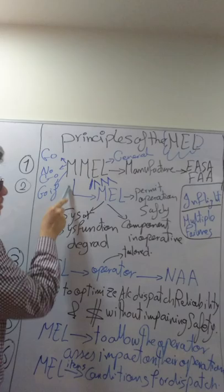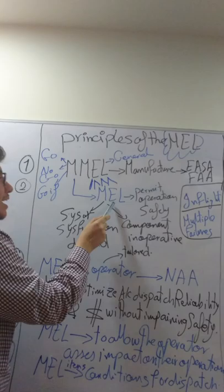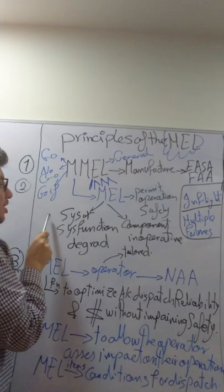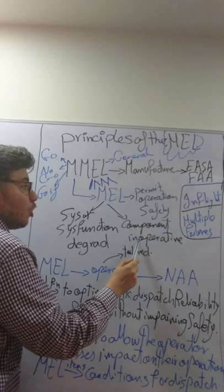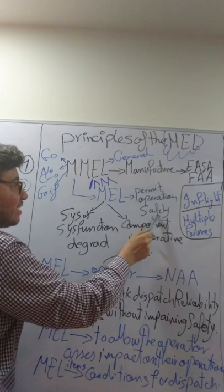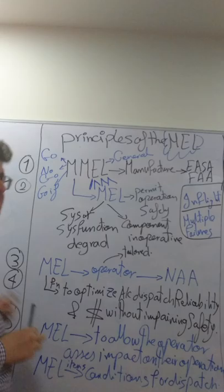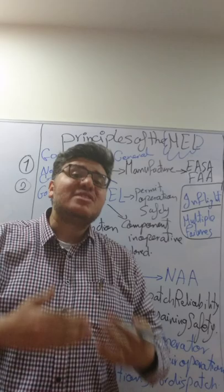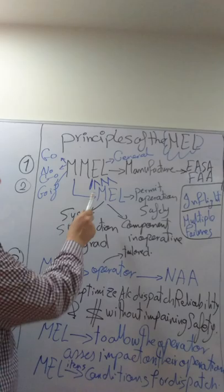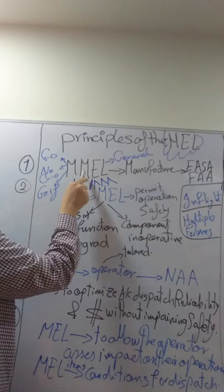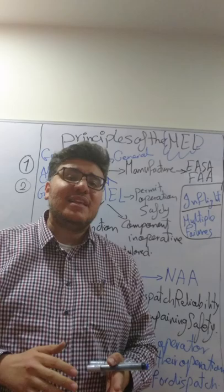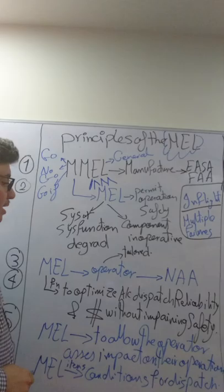Principle number two: the Master Minimum Equipment List is the mother of the MEL. The MEL is a tailored MEL which permits safe operation of the aircraft. If the aircraft suffers from a system degrade or component inoperative condition, the operator can use the MEL to dispatch the aircraft safely. The MEL must be as restrictive as, or more restrictive than, the Master Minimum Equipment List. The key difference is that the MEL is a tailored one.